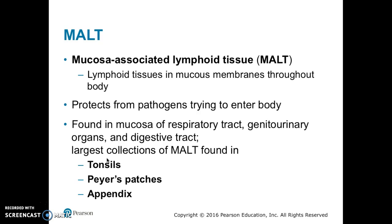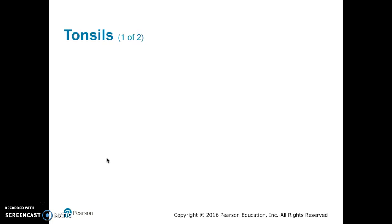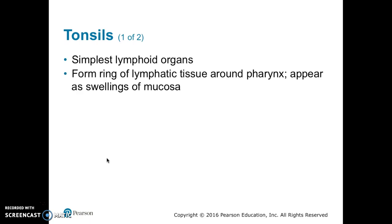The largest collections of MALT are found in the tonsils, Peyer's patches, and appendix. The tonsils are the simplest lymphoid organs. They form a ring of lymphatic tissue around the pharynx and look like swellings of the mucosa.